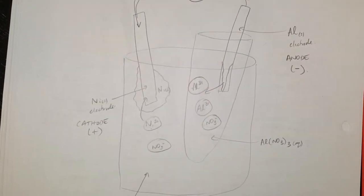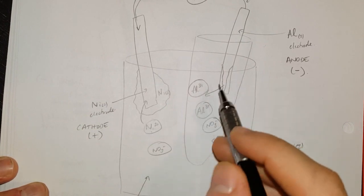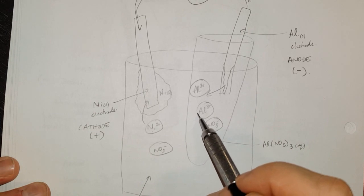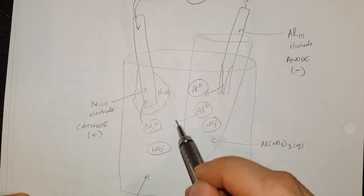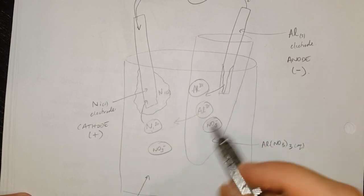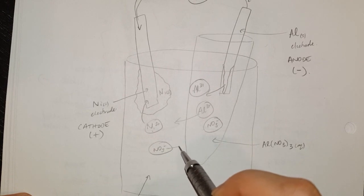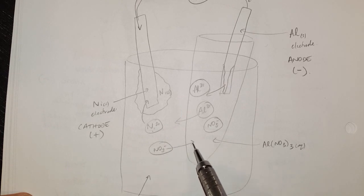We still need to look at where the ions are migrating. The positive ions can't build up on the anode side, so they're going to move into the cathode side — they're attracted to that side. The nitrate ions are going to be attracted into the anode side. So we have ion migration going in both directions through the porous cup.